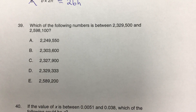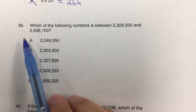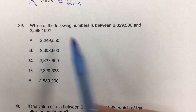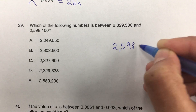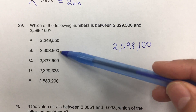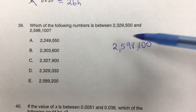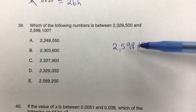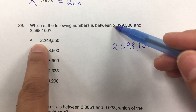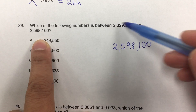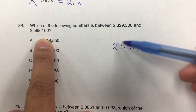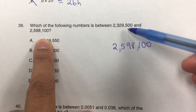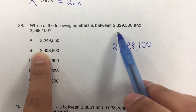Number 39: which of the following numbers is between 2,329,500 and 2,598,100? I recommend leaving a space and writing 2,329,500 on one side and 2,598,100 on the other. The number in between has to be greater than the smaller one but less than the larger one. You'll compare each answer choice to both. If it's smaller than the lower bound or bigger than the upper bound, it's not between them. All choices start with two million, so we move to the next digit.